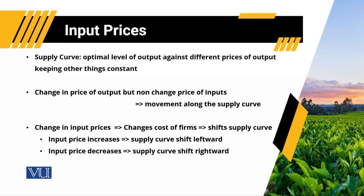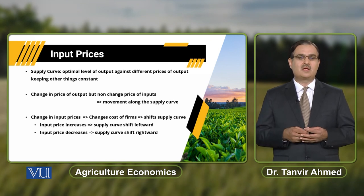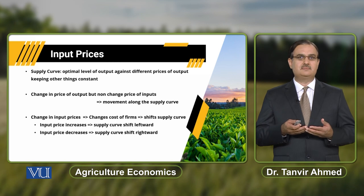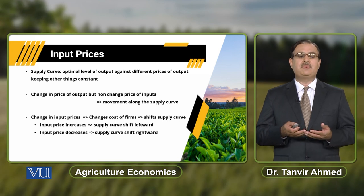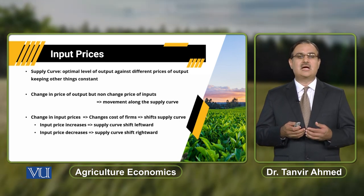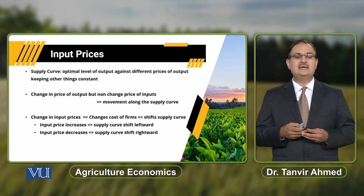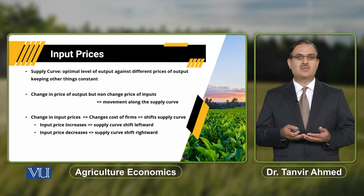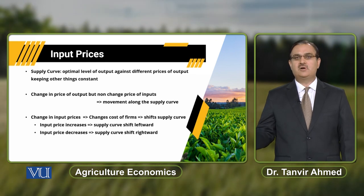Agar input prices change hongi, because of that change in input prices, there is change in cost of production of the firms. And because of that change in cost of production, there is a shift in supply curve. Agar input prices increase hon, there is an increase in cost of production and a decrease in supply of the commodity — supply curve will move leftward and upward. Agar ham baat kerayin ke there is decrease in prices of input, because of that decrease, supply curve will move rightward and downward.